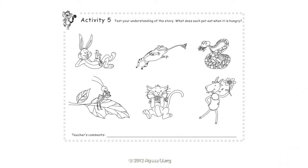Activity 5. Test your understanding of the story. What does each pet eat when it's hungry? The rabbit eats a carrot. The frog eats a fly. The snake eats a spider. The cricket eats a leaf. The cat eats a fish. The goat eats a flower.